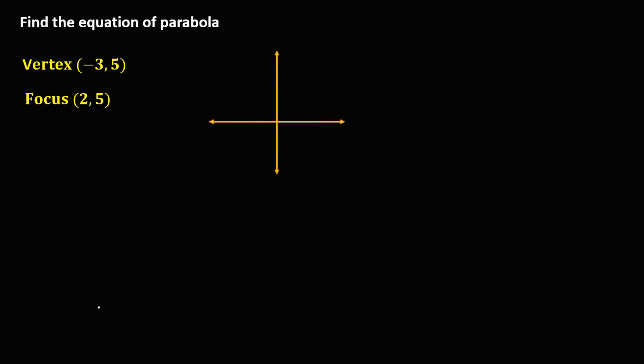First, we need to graph this parabola. So in a plane, this one is positive x, negative x, positive y, and negative y.